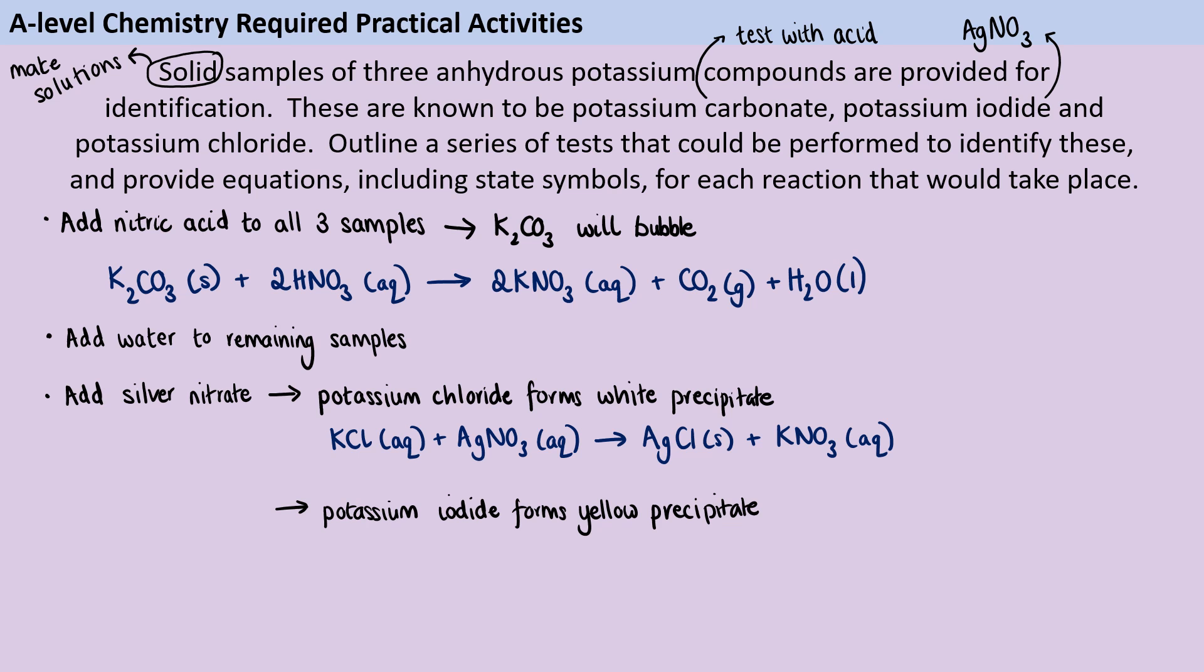And then if we've got potassium iodide, we're going to have a yellow precipitate. And so we then have a very similar chemical equation for that one.